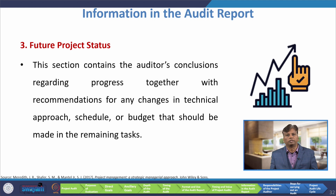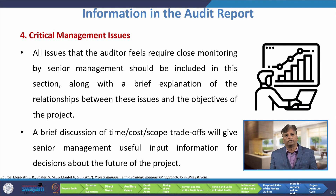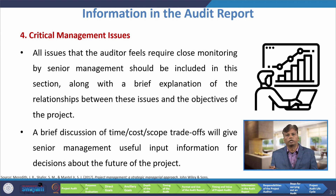The next thing expected from the project audit report is future project status. This section contains the auditor's conclusions regarding progress together with recommendations for any changes in technical approach, schedule, or budget that should be made in the remaining tasks. The fourth thing expected from the audit report is critical management issues — all issues that the auditor feels require close monitoring by senior management should be included in this section, along with a brief explanation of the relationship between these issues and the objectives of the project. A brief discussion of time, cost, and scope trade-offs will give senior management useful input for decisions about the future of the project.